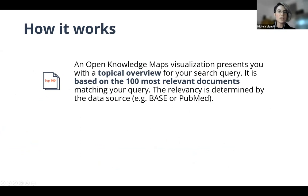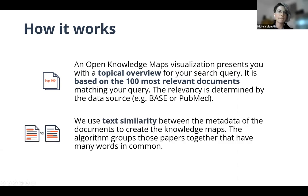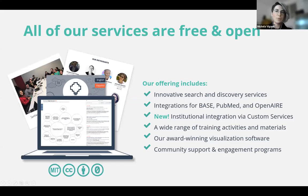Open Knowledge Maps creates maps based on the 100 most relevant documents for your search term. Relevancy is defined by the two search engines used, meaning subject similarity between your search term and document metadata. Open Knowledge Maps then uses text similarity between the metadata of the 100 documents to create the map. The algorithm groups papers together that have more words in common. All content is licensed under CC BY, so you can reuse the knowledge maps as long as you acknowledge Open Knowledge Maps.